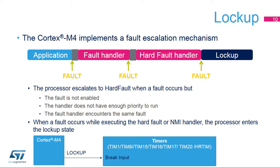When a fault occurs while executing either the bus fault handler, the memory management fault handler, or the usage fault handler, the processor escalates this event to the hard fault handler. Note that bus fault, memory management fault, and usage fault have to be explicitly enabled. By default, any fault leads to the hard fault handler.